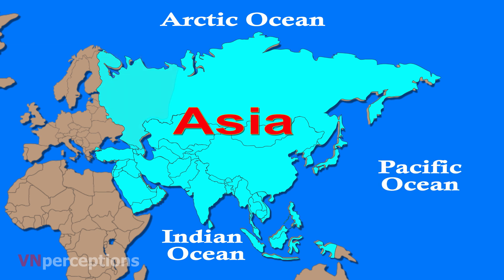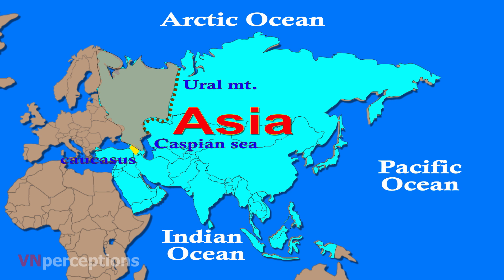In the west, Asia is separated from Europe by the Ural Mountains, the Caspian Sea, the Caucasus Mountains, and the Black Sea. In the southwest, it is linked with Africa through the Sinai Peninsula.